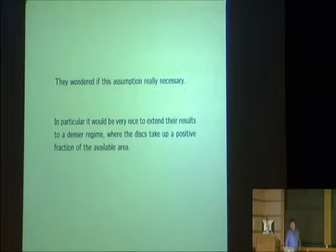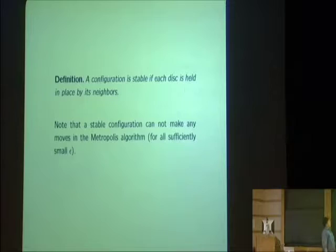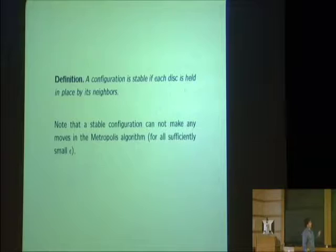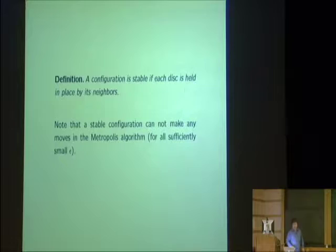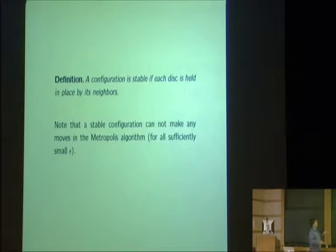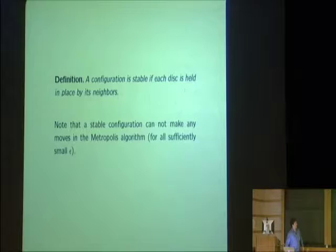It would be nice to extend the results to a denser regime. Here is a definition from classical sphere packing: a configuration of discs is stable if each one is held in place by its neighbors — something you can check locally. This is equivalent to what Torquato and others in physics would call 'locally jammed.' A stable configuration is one that can't make any moves in the Metropolis algorithm because we're only moving one disc at a time.